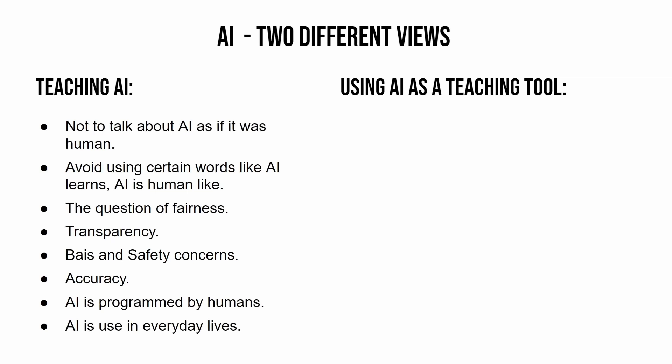The courses have been very clear about things to tell children. You should not talk about AI as if it were human — it isn't. Avoid using phrases like 'AI learns' or 'AI is human-like.' At the moment, AI doesn't learn in that sense; the only way AI learns is from large language models — large blocks of data that are fed in, which AI analyzes, and then an algorithm produces a human-like response. There are also big questions around fairness, transparency, bias, and safety.